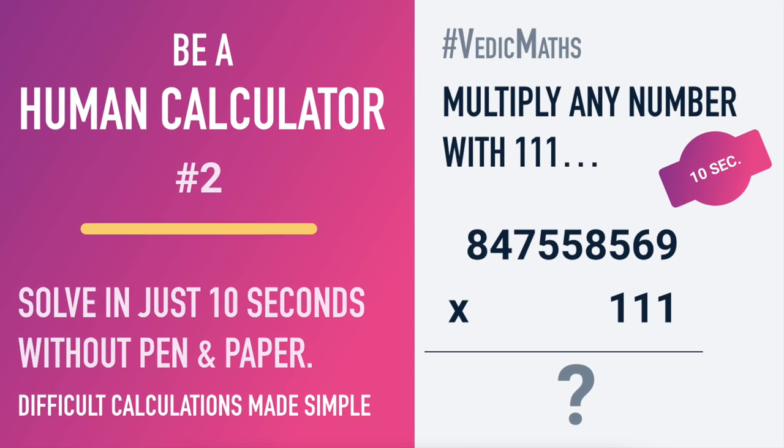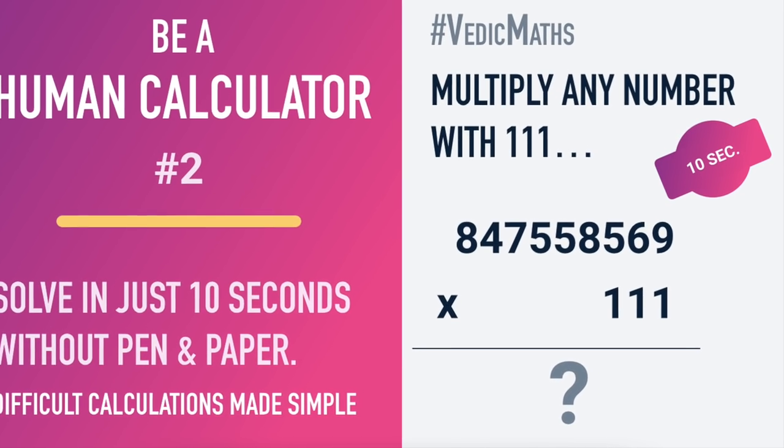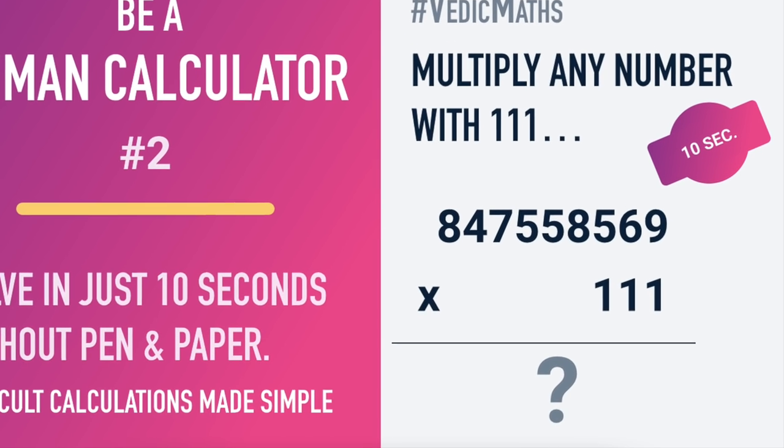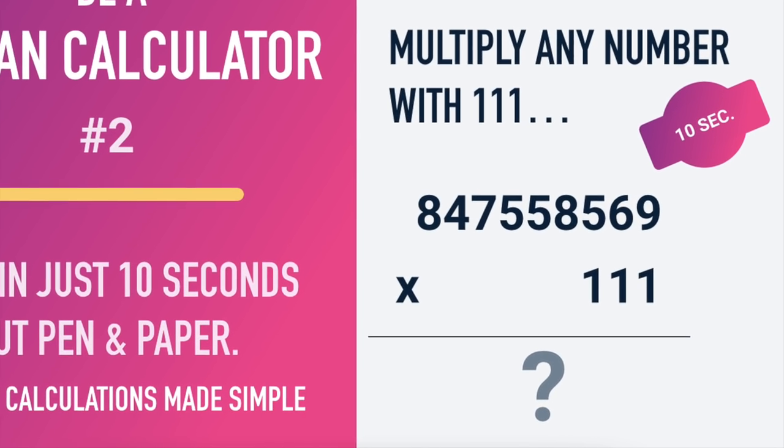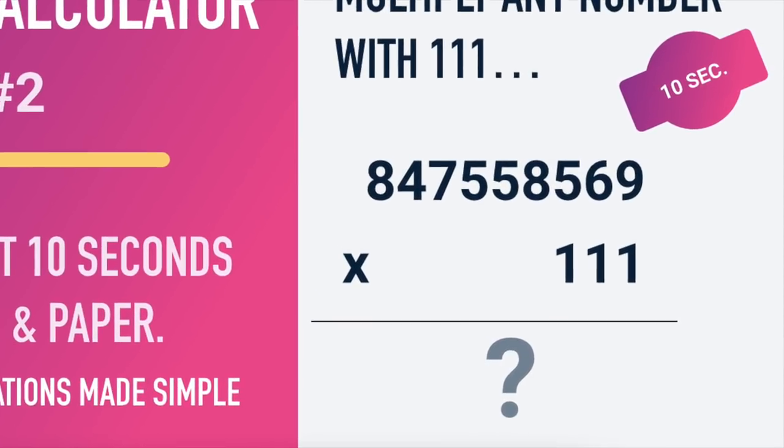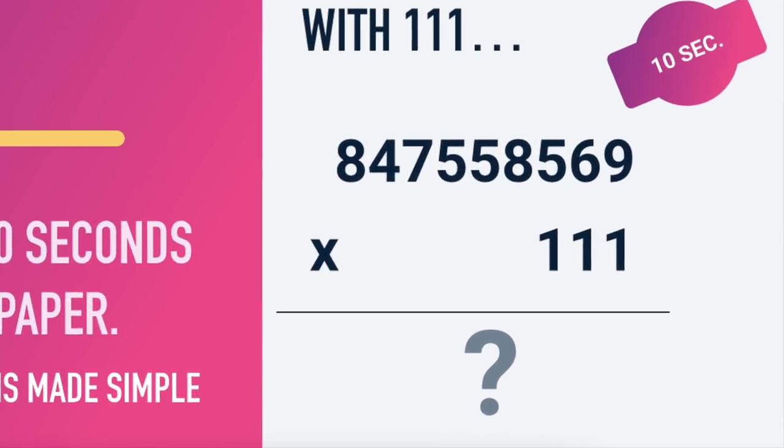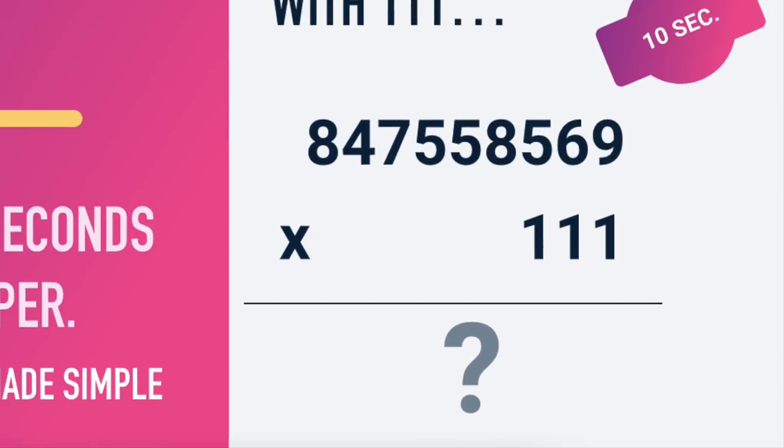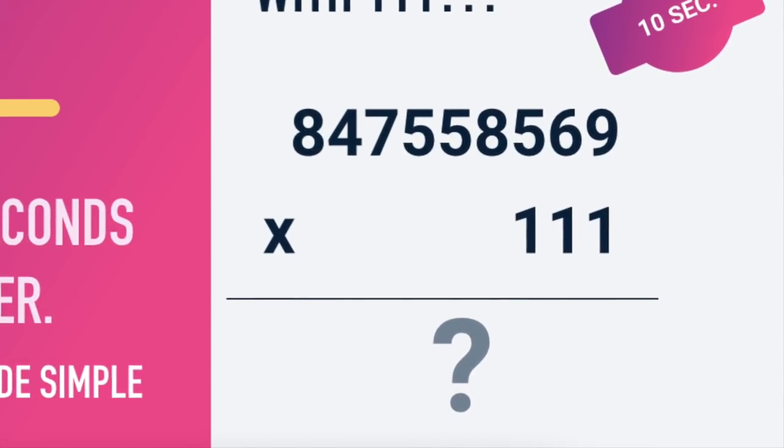Hello everyone. In this video, we're going to learn how to multiply something like this, basically a number multiplied by a series of ones, without using pen and paper, within 5 to 10 seconds, with the help of Vedic maths, creating some magic, and by being a human calculator. How is it done? Let's find out.